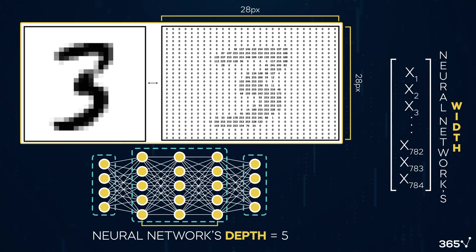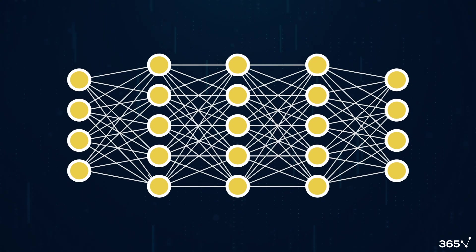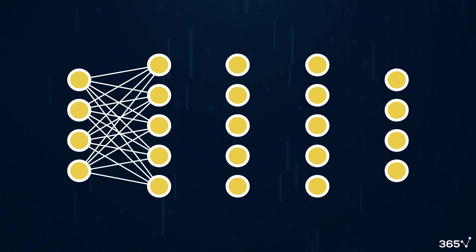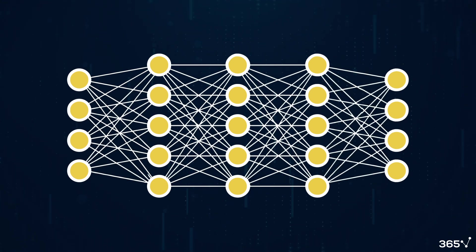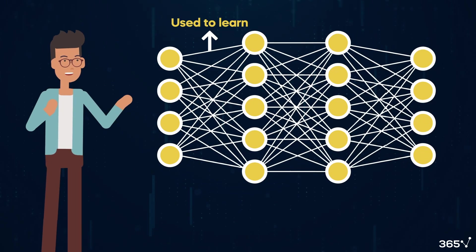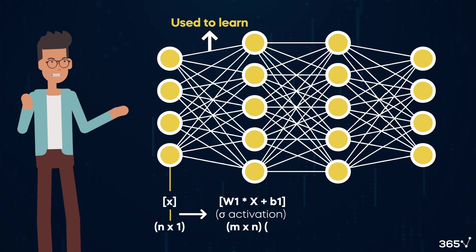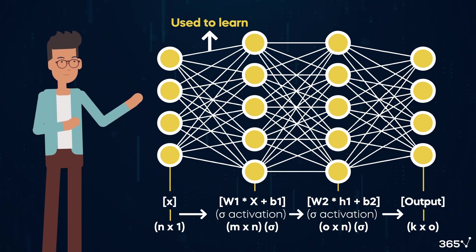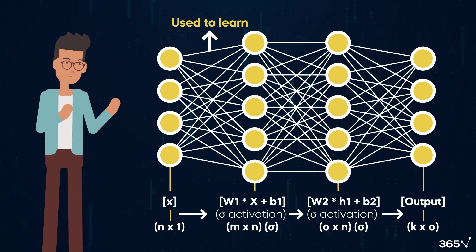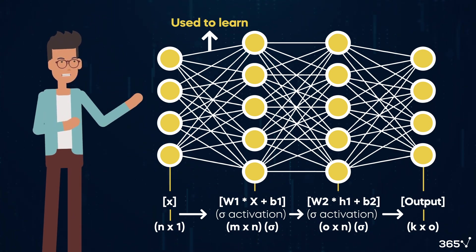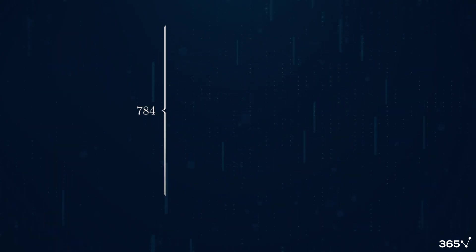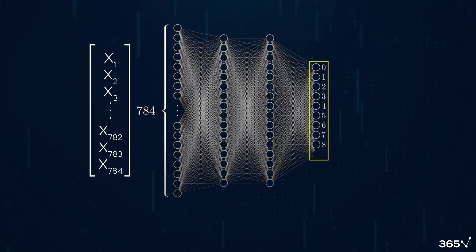We have numerous connections between nodes because each layer's nodes are linked to every node in the subsequent layer. This extensive network of connections is essential for learning from input data, serving as mathematical transformations. These transformations occur through a mix of weights and nonlinear operations, with optimal weight combinations across all nodes enabling learning.